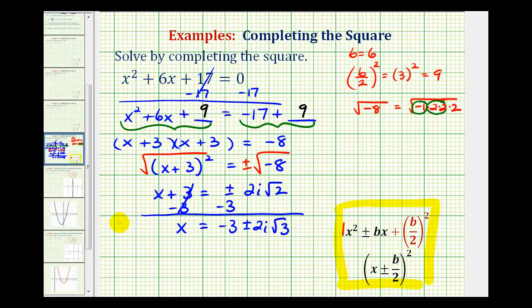So remember, we have two solutions here. One is x equals negative 3 plus 2i square root 3. And the other solution is x equals negative 3 minus 2i square root 2.